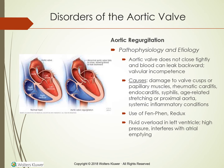Aortic regurgitation occurs when the aortic valve does not close tightly and blood can leak backward — a condition called valvular incompetence. Valvular incompetence can result from damage to the valve cusps or papillary muscles. It may be a consequence of various disorders such as rheumatic carditis, endocarditis, syphilis, age-related stretching of the proximal aorta, and systemic inflammatory conditions.